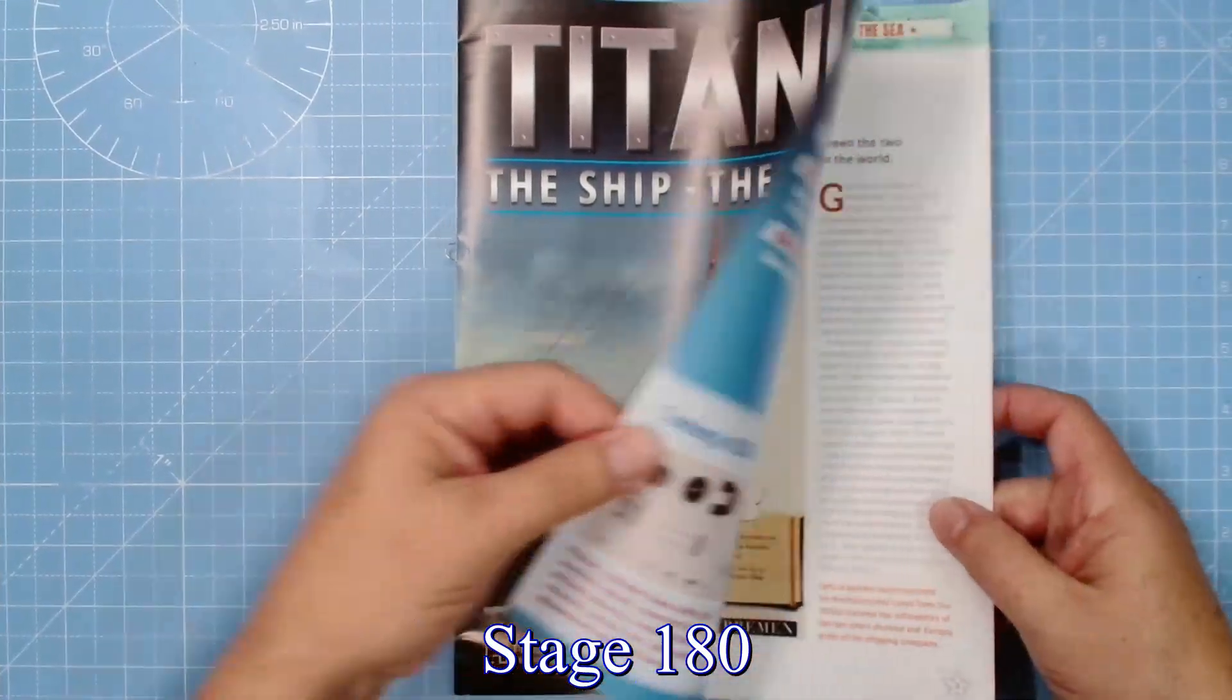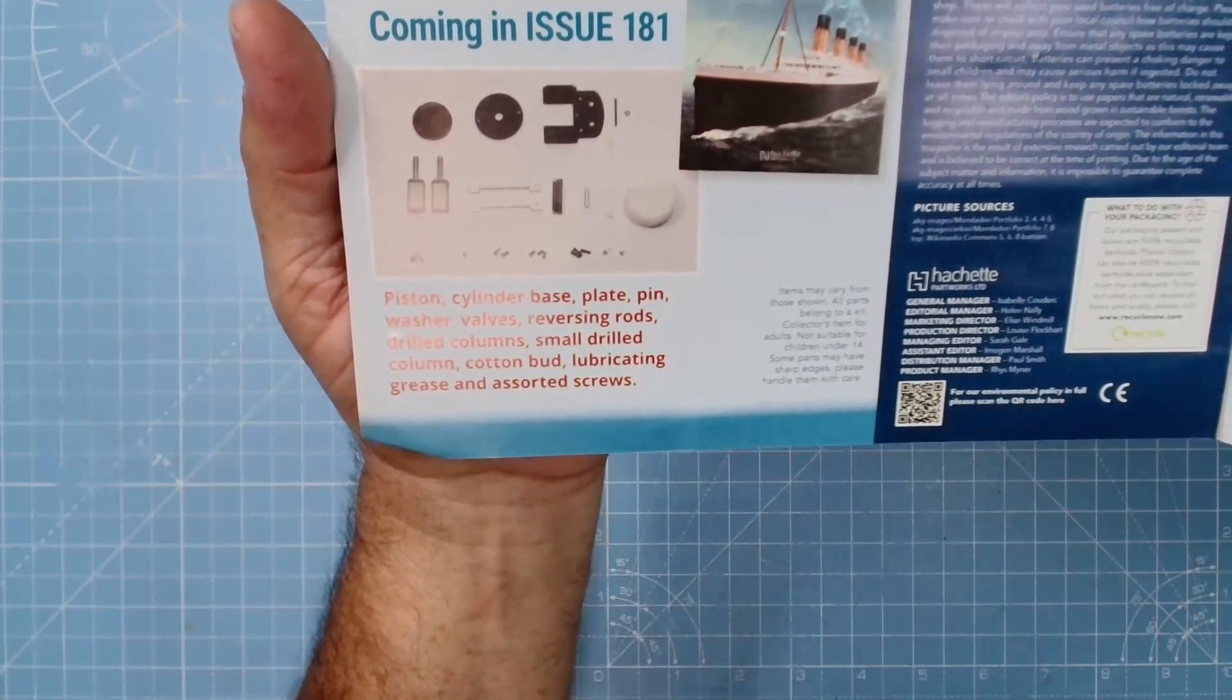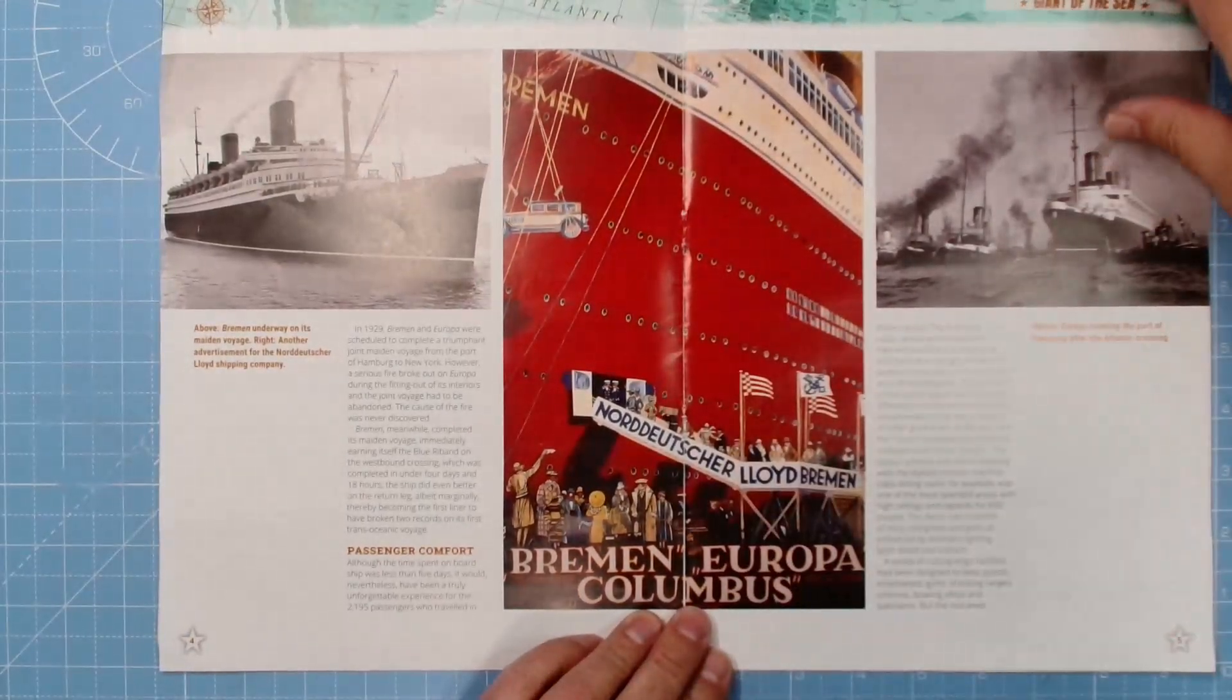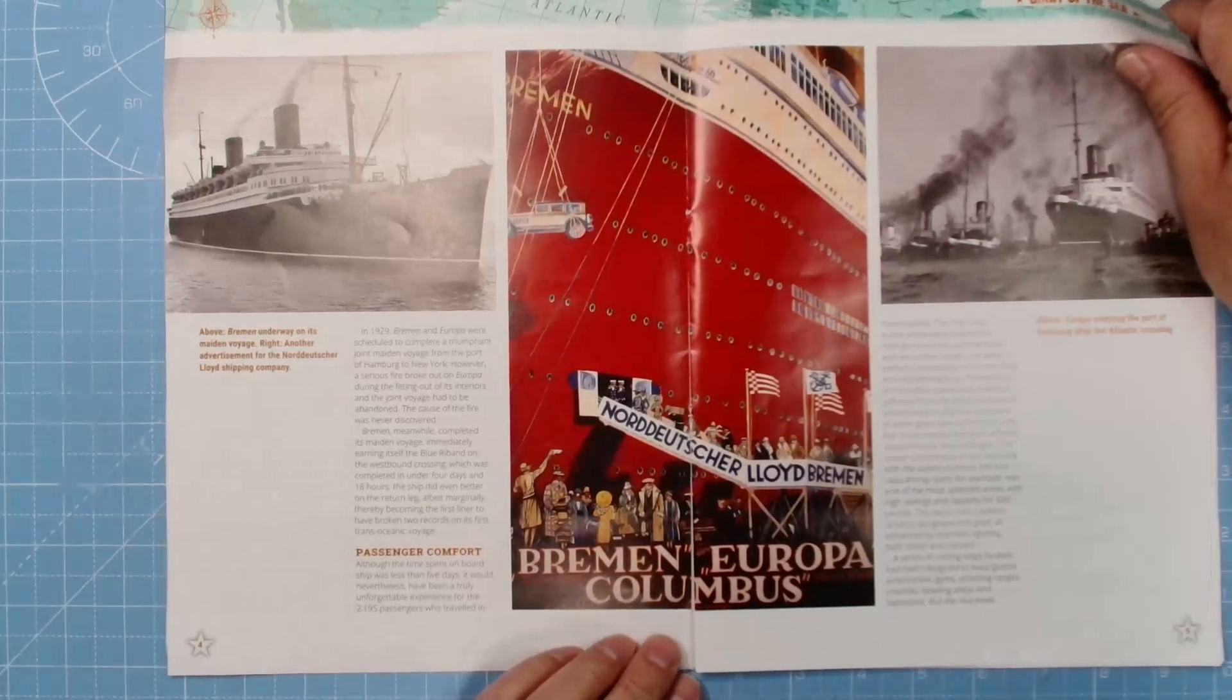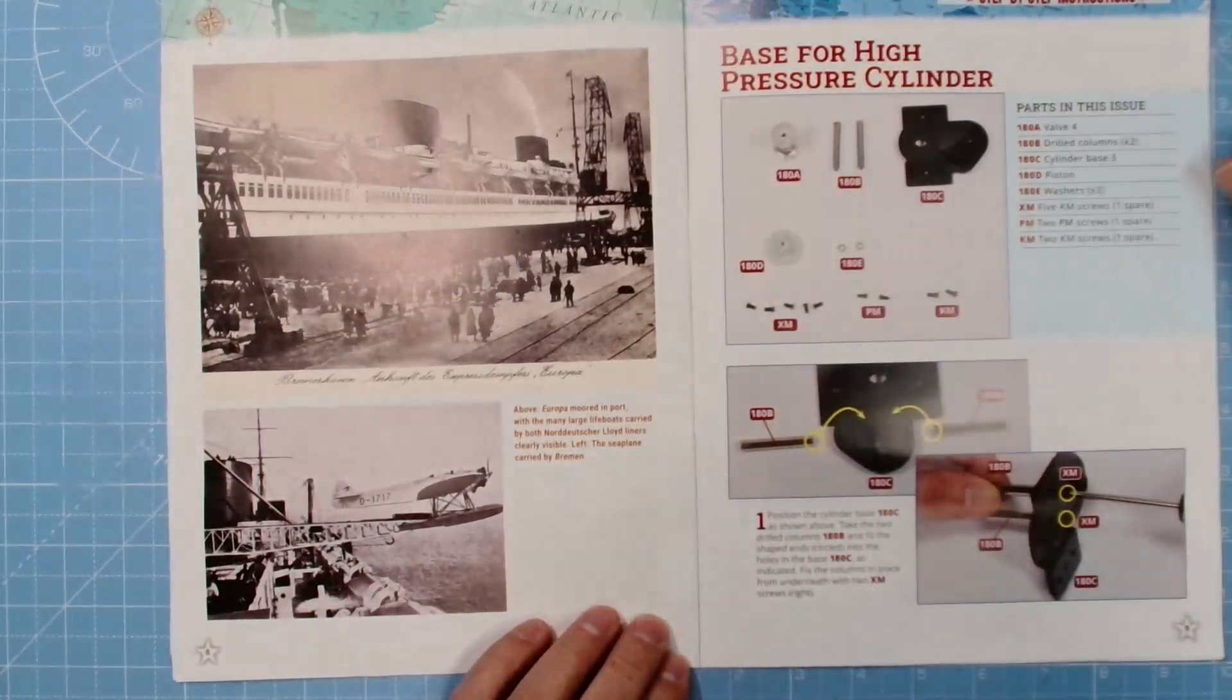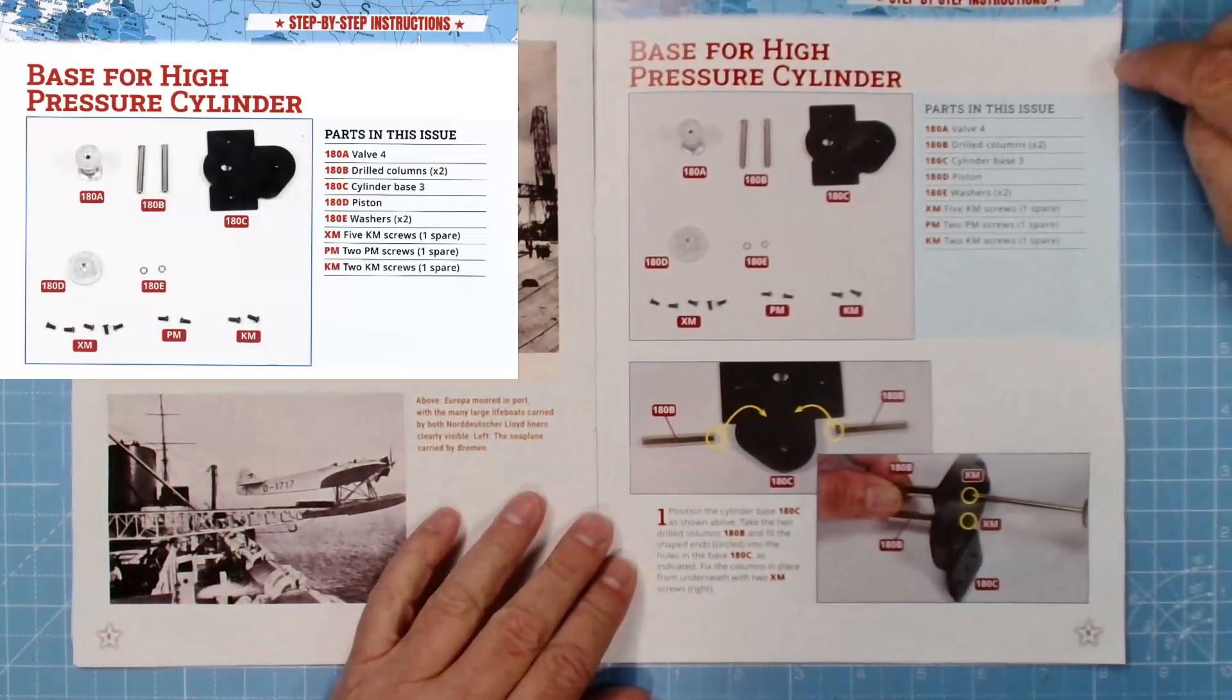Let's move on to stage 180. Coming in issue 181: piston, cylinder base, plate, pin, washer, valves, reversing rods, drill columns, small drill column, lubricating grease, and assorted screws. Here we are, Bremen and Europa, symbols of rebirth. This is brilliant. Germany's defeat in World War One saw them creating these two liners. Bremen got the Blue Riband on the westbound crossing and coming back as well. Europa was delayed due to a fire. That's the interior, which meant Europa couldn't partake in the race initially. That was for delivering mail before they got to America, with a lot more lifeboats as well.